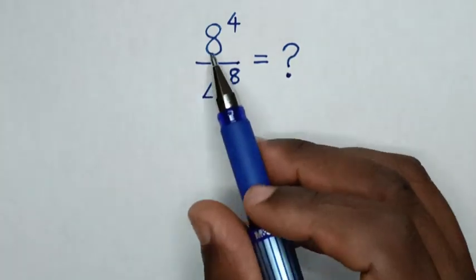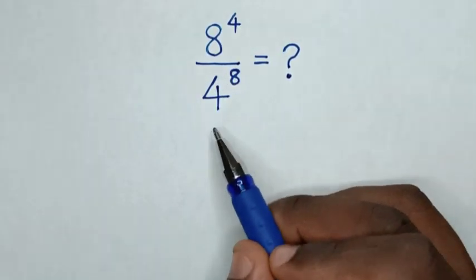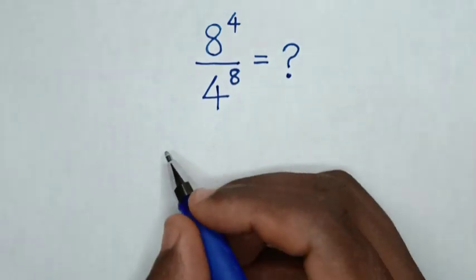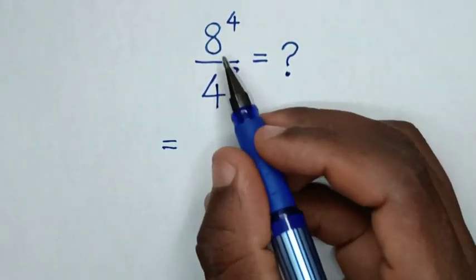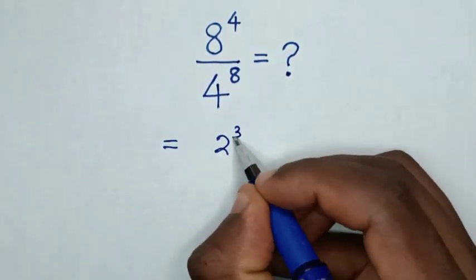Hello! 8 power 4 over 4 power 8. So this is equal to 8 is same as 2 power 3.